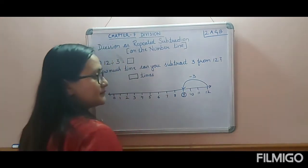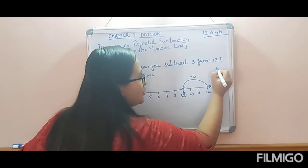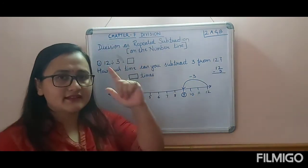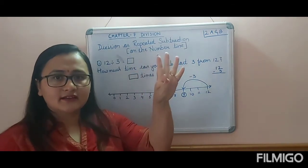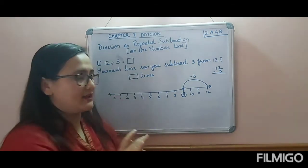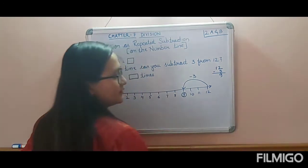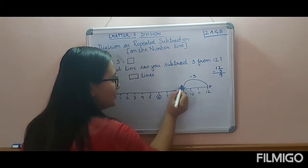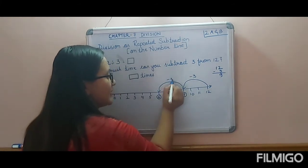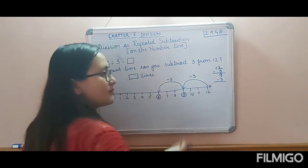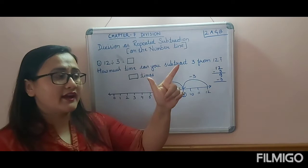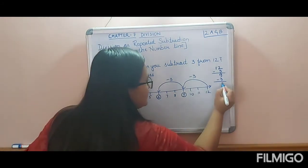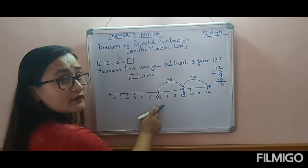We write minus 3 for the first jump. Then we do repeated subtraction alongside: 12 minus 3 equals 9. Now from 9, count back again: one, two, three — and we reach 6. Write minus 3 again. Then 9 minus 3 equals 6.